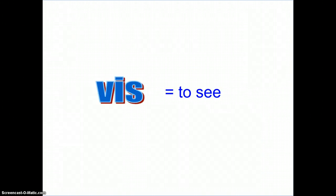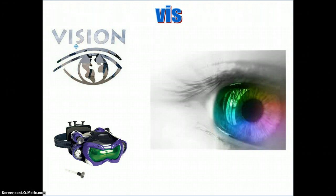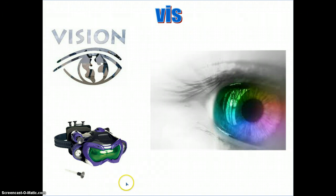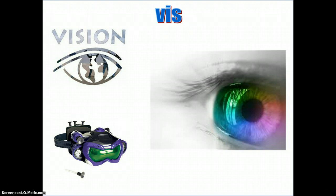Our last root is vis or vid, which means to see. Vision has the suffix -sion, which means the process of, and vis means to see. So vision is the process or the act of seeing something. Because we were talking about thermal goggles before, here is a picture of night vision goggles, which allow you to see small amounts of light magnified at night time — pretty cool looking.